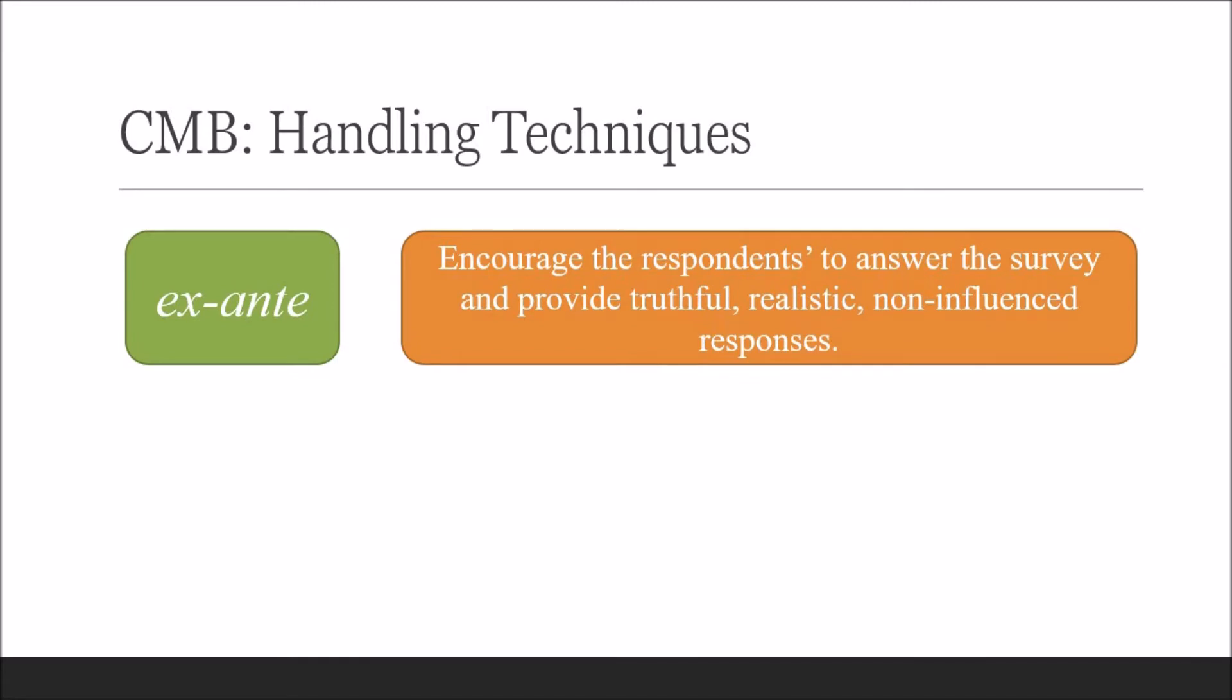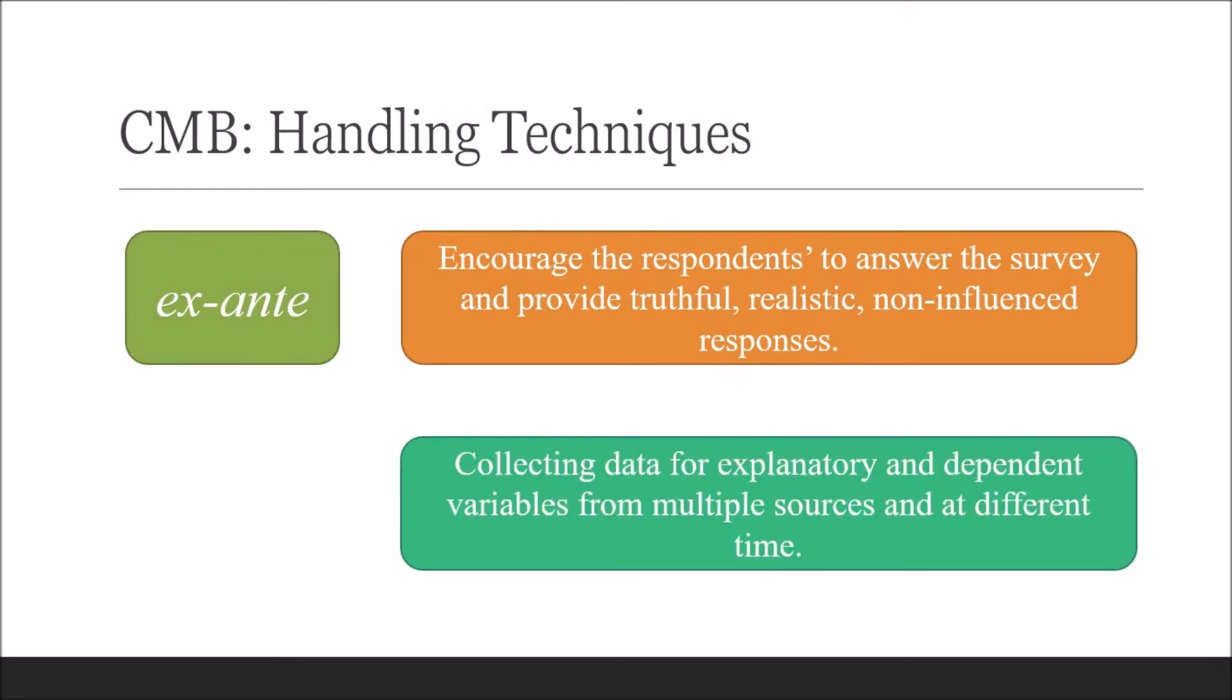Statistical literature suggests that common method bias can be alleviated by using ex-ante techniques like encouraging the respondents to answer the survey willingly and provide truthful, realistic, and non-influenced responses. In addition, collecting data for explanatory and dependent variables from multiple sources and different times is also helpful.